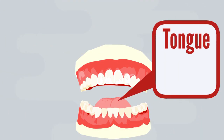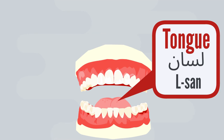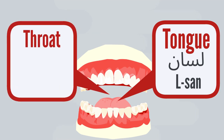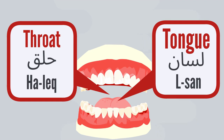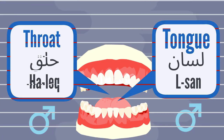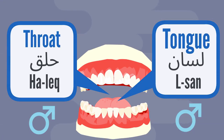Next is tongue — lsān. And throat — hālīq. Both are male nouns, so we say hādā lsān and hādā hālīq.